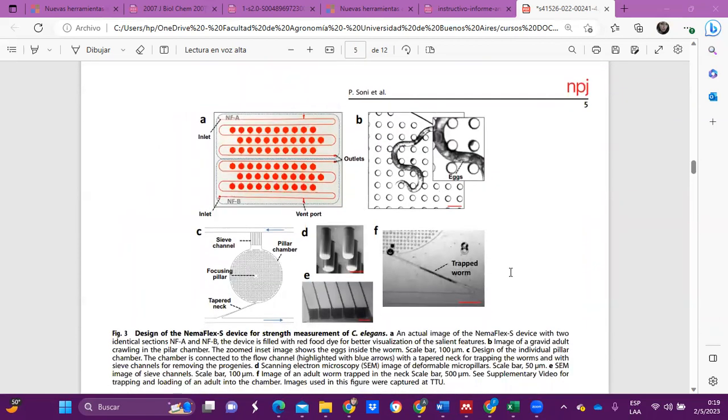In this view here, you can see the layout of the NemaFlex device that consists of two identical sections of TRT chambers, each with pillars. The presence of two separate sections allows redundancy in case one section clogs and also reduces pressure drops during animal loading. Each section has a single inlet, a single outlet, and a side vent port to remove air bubbles. The pillar chamber wall has a diameter of three millimeters to allow the one-millimeter-long adults to move freely within the pillars arranged as a square lattice.